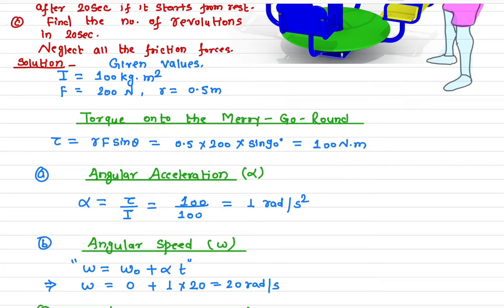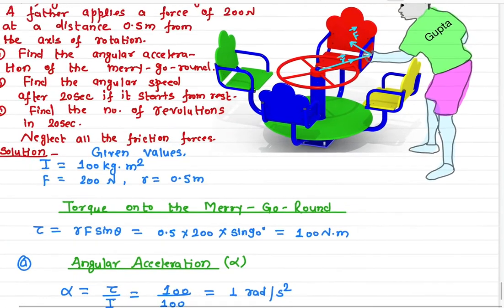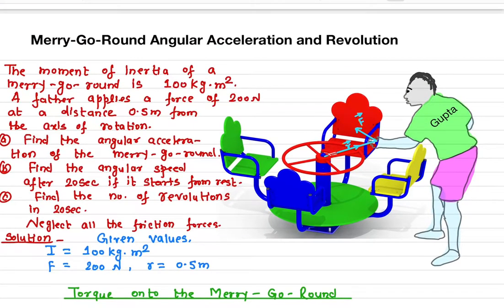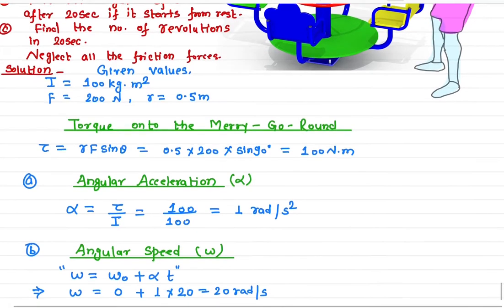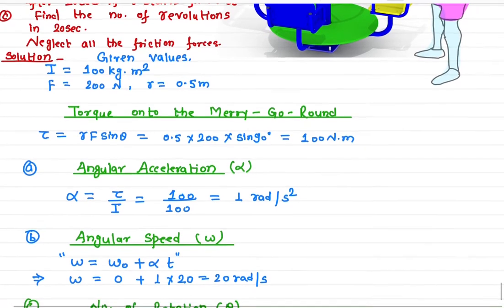Here r is 0.5 meters, the force is 200 Newtons, and θ is the angle between the r vector and the force — in this case 90 degrees. So sin 90° = 1, giving us a torque magnitude of 100 Newton meters.